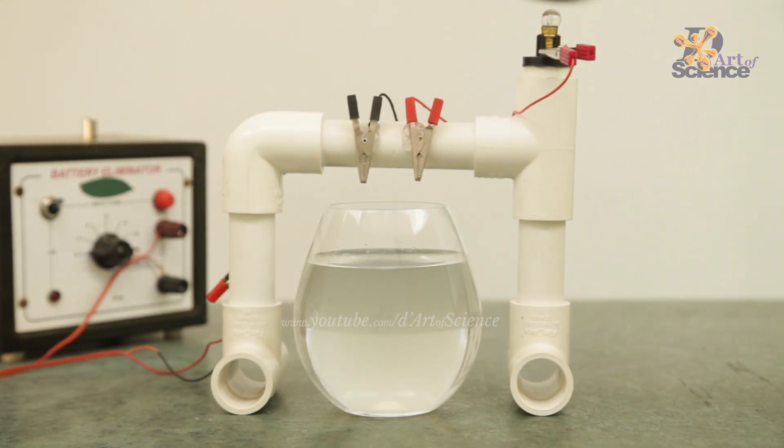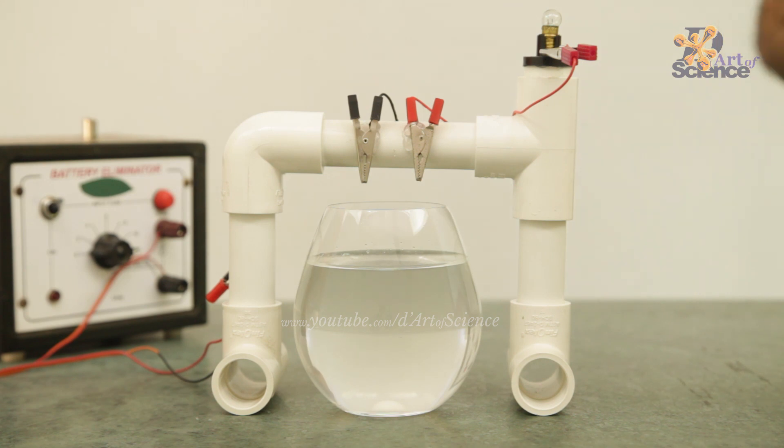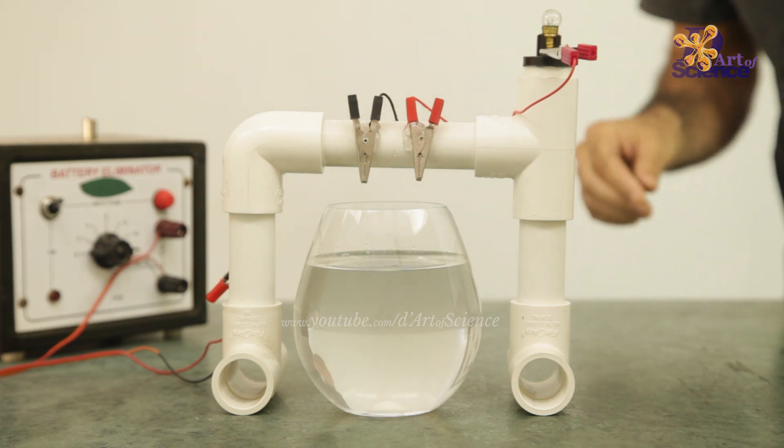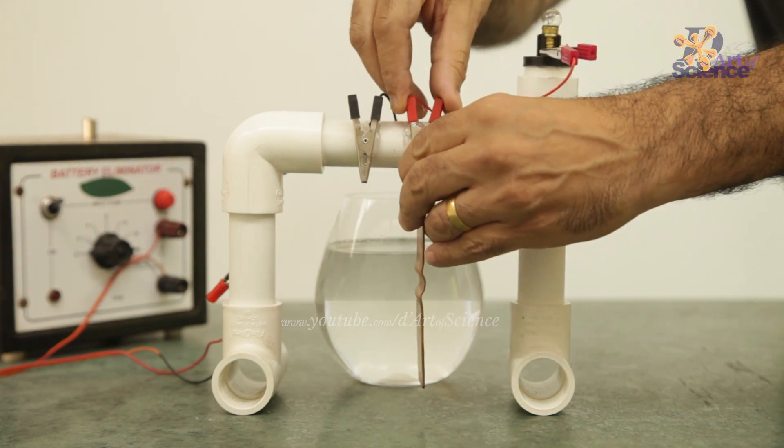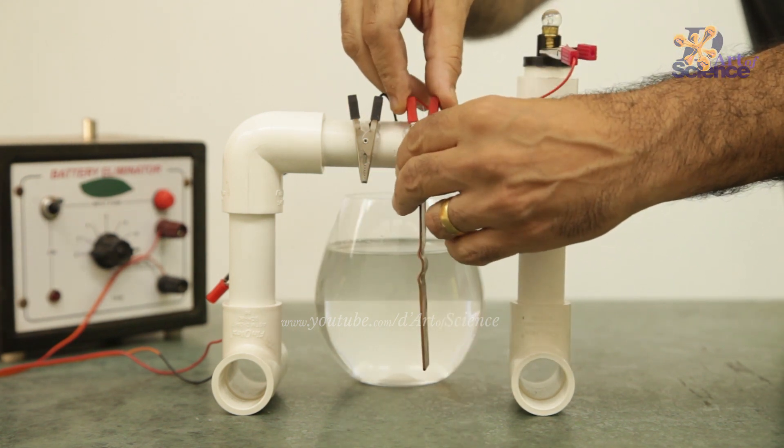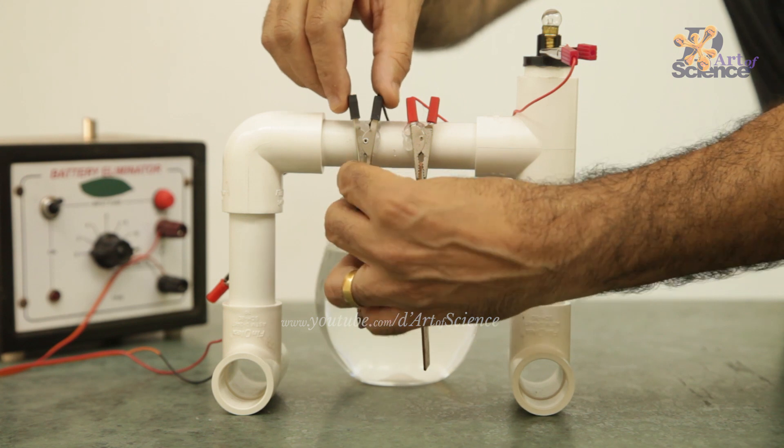Now you need some small copper sheet or a copper pipe or a copper plate, whatever you can find or buy from a hardware store. Put the bigger one at the anode and a small piece of copper at the cathode.